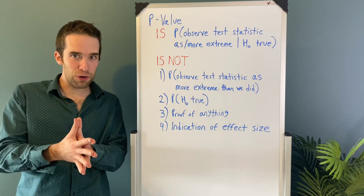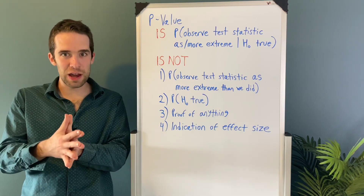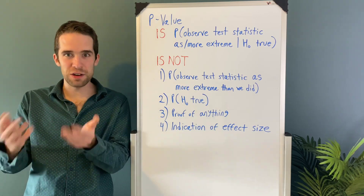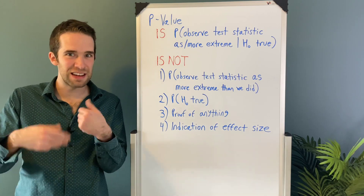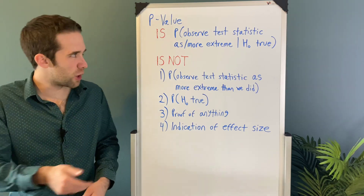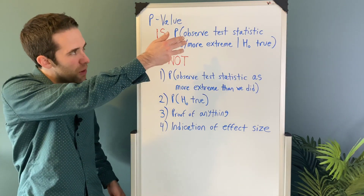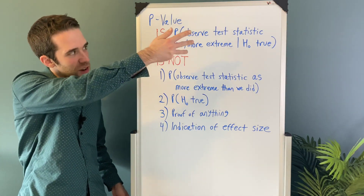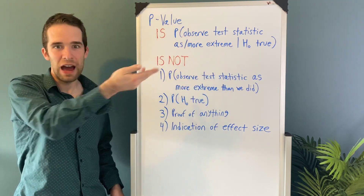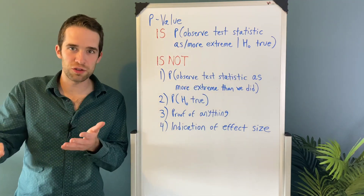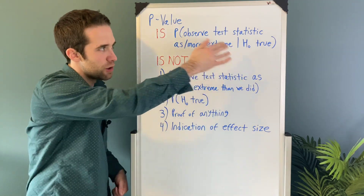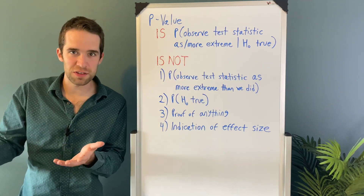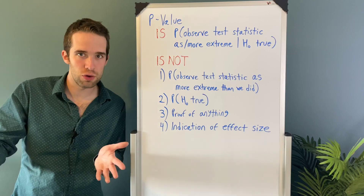I personally really like writing the definition of a p-value out as a conditional probability — as the probability you observe a test statistic as or more extreme than you did, given the null hypothesis is true.